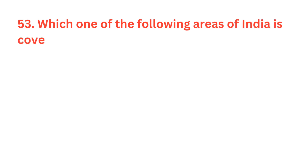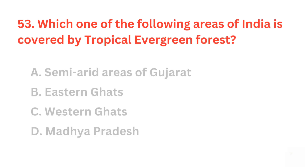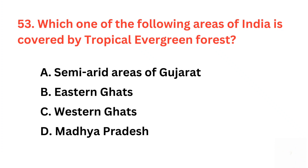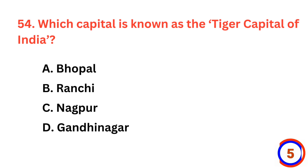Which one of the following areas of India is covered by tropical evergreen forest? The correct answer is option C, Western Ghats. Which capital is known as the Tiger Capital of India? The correct answer is option C, Nagpur.